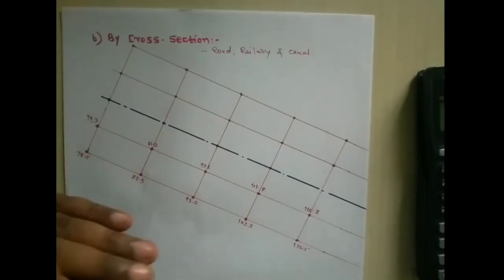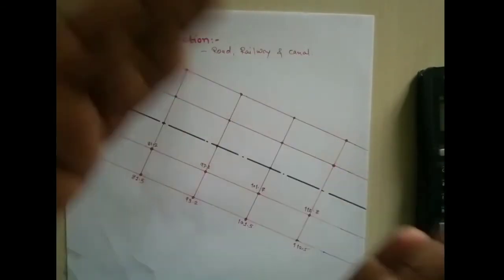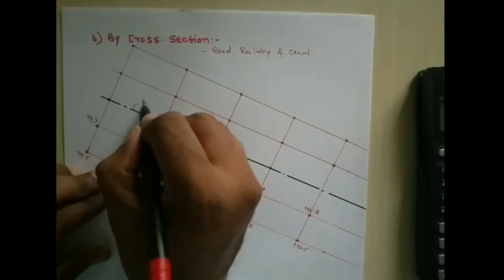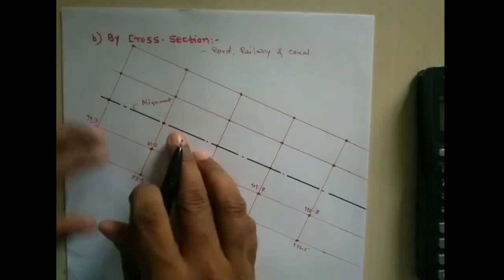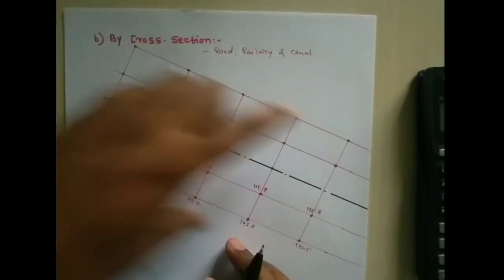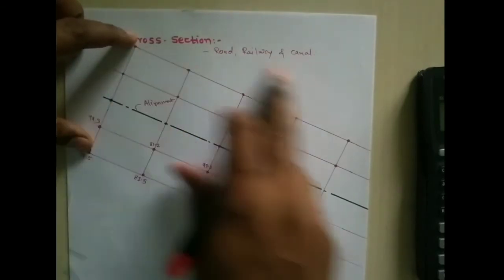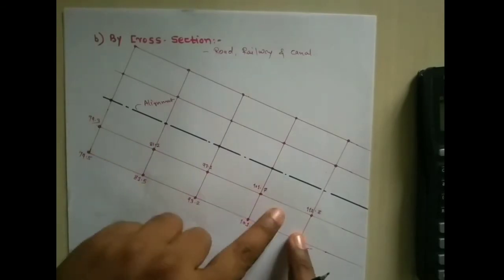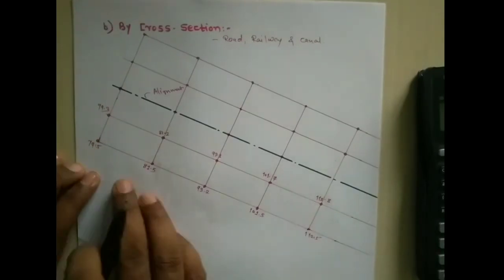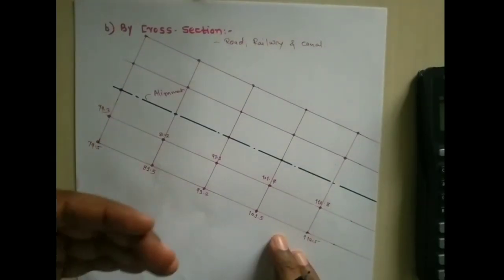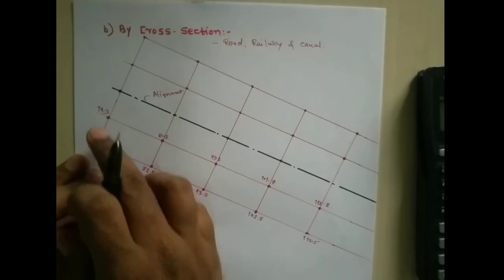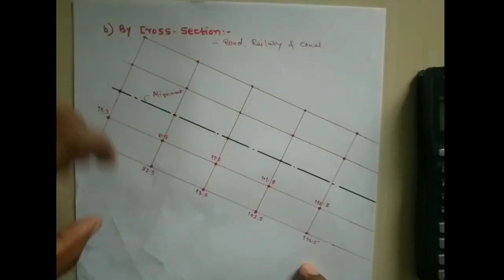Along the alignment of the road, which you are seeing in black color, is the alignment. Across this alignment on the left side or the right side, we select a particular strip, and in that strip we take a particular cross section. In this total area we have covered using the indirect method with spot levels and interpolation in particular areas.